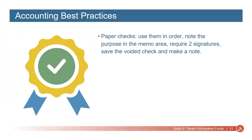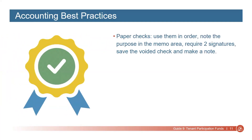Here are some accounting best practices your Resident Council should use. When you use paper checks, use them in order. Write the purpose in the memo area. Require two signatures on each check, generally one from the Treasurer and one from the Board President. If a check needs to be voided, save the voided check and make a note.